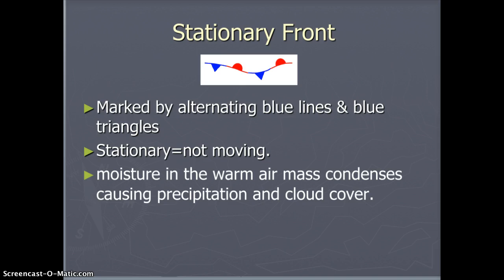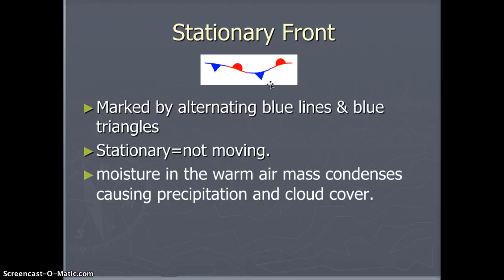A stationary front is just that — it's stationary, it doesn't move. It is marked by alternating blue lines and blue triangles. Stationary means not moving. Moisture in the warm air mass condenses, causing precipitation and cloud cover. It's like the warm front wants to move north and the cold front wants to move south — they bump into each other with the same strength and don't push past each other. They just sit there pushing back and forth, so a stationary front will stay in one place for several days.